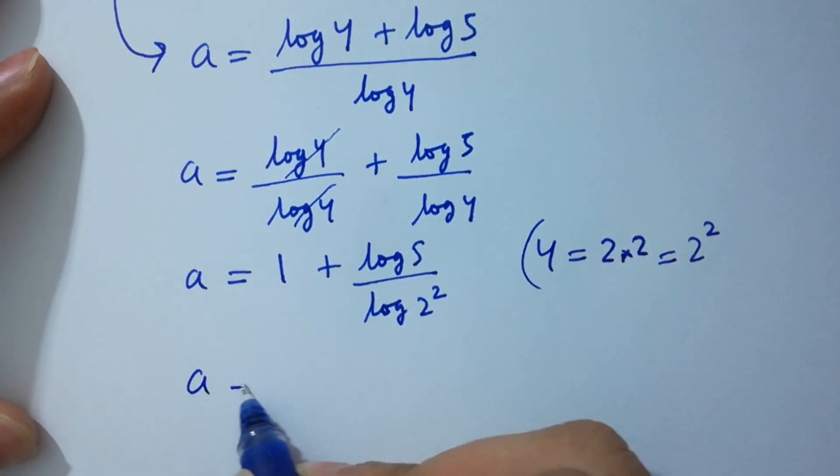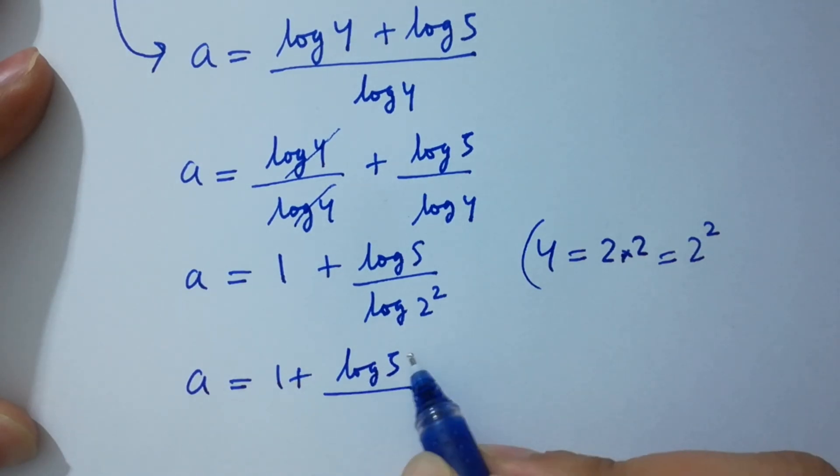So, a equals 1 plus log 5 over log 2 squared.